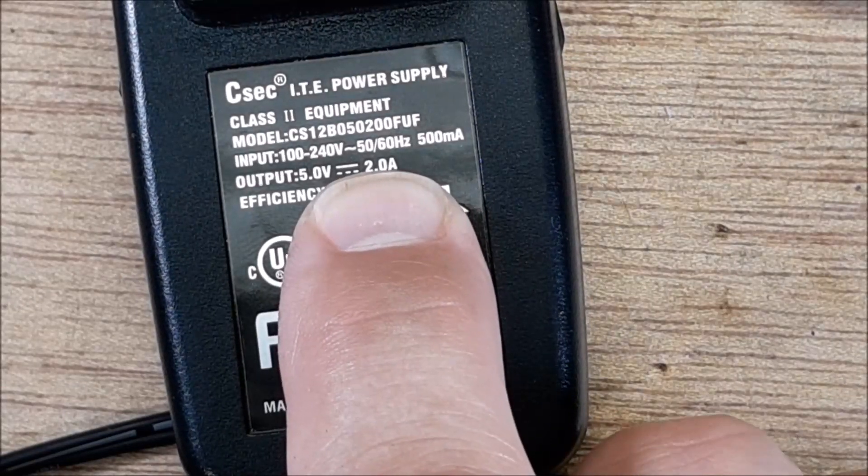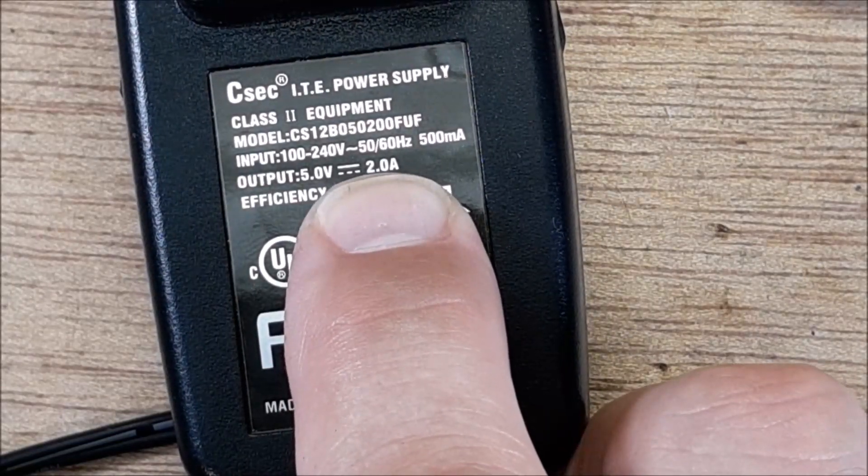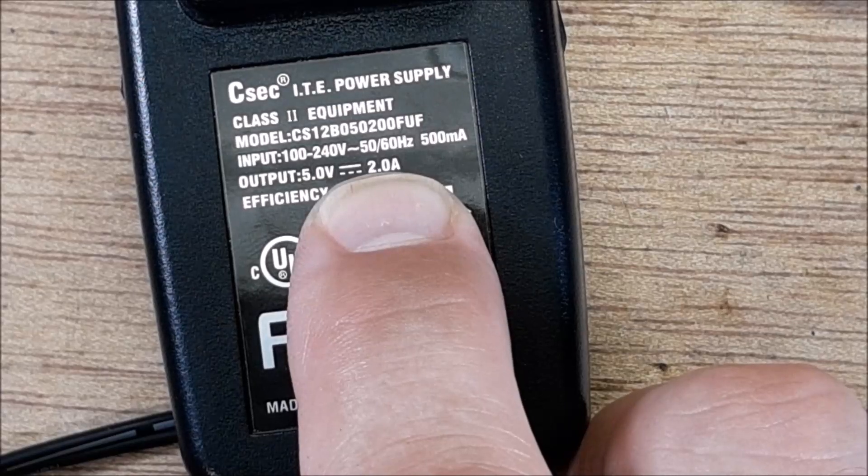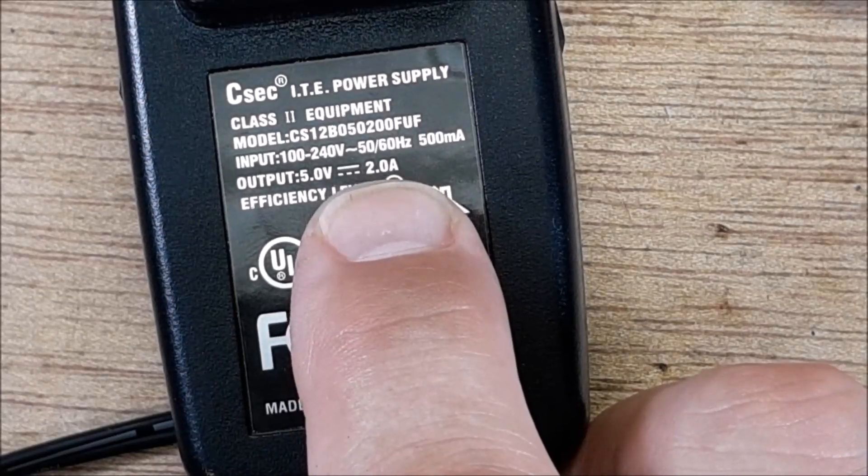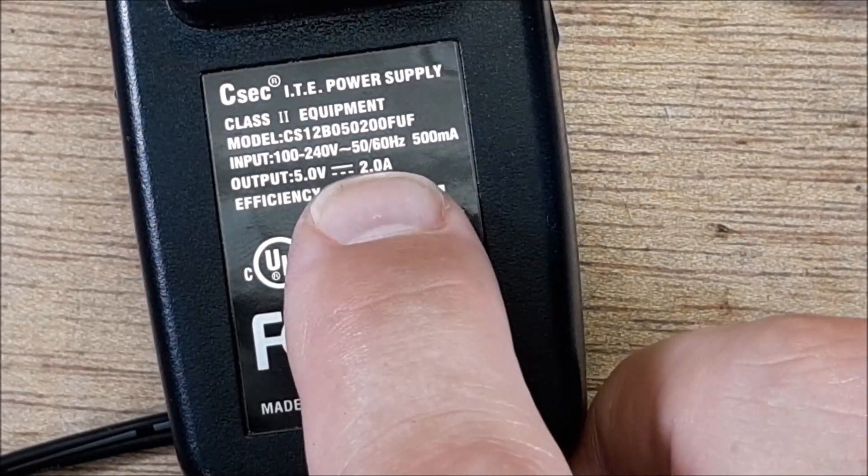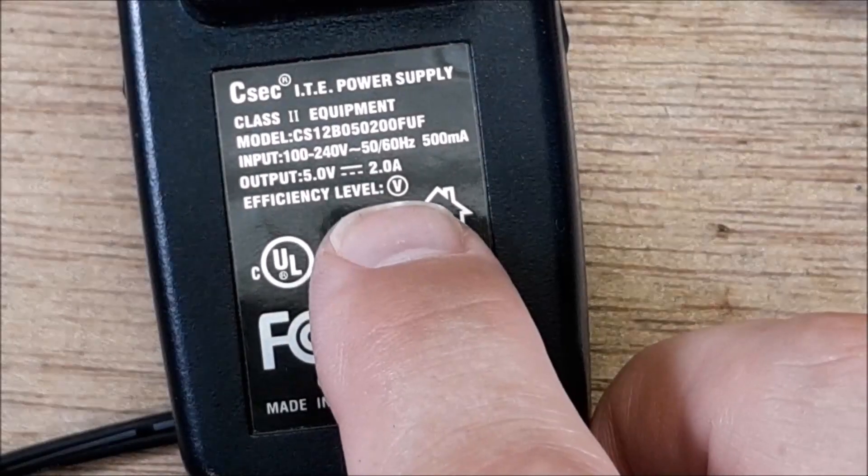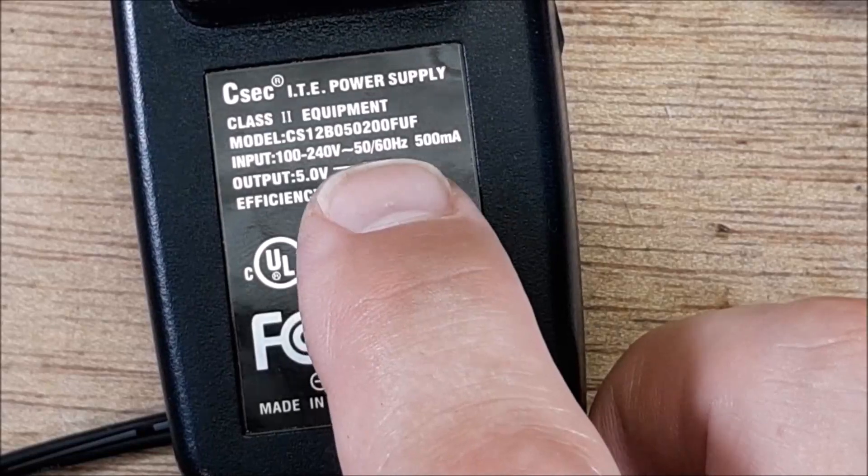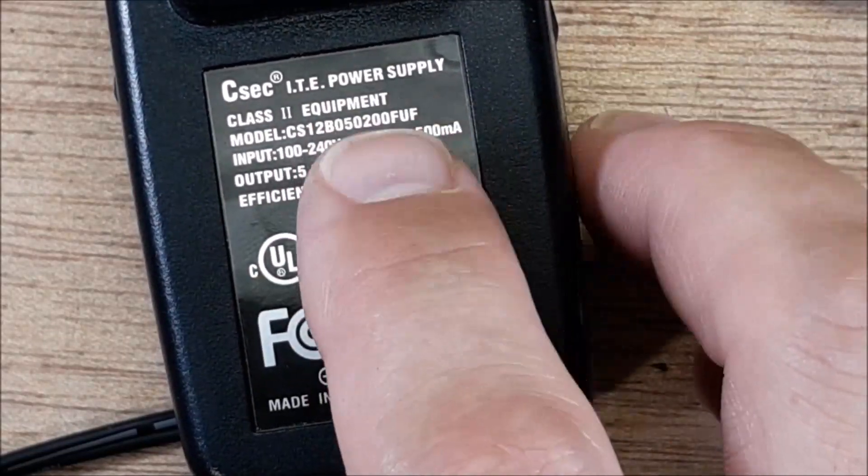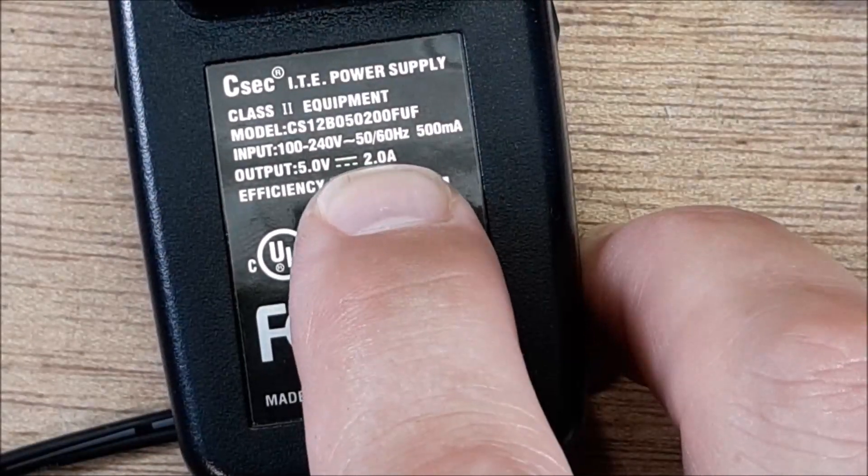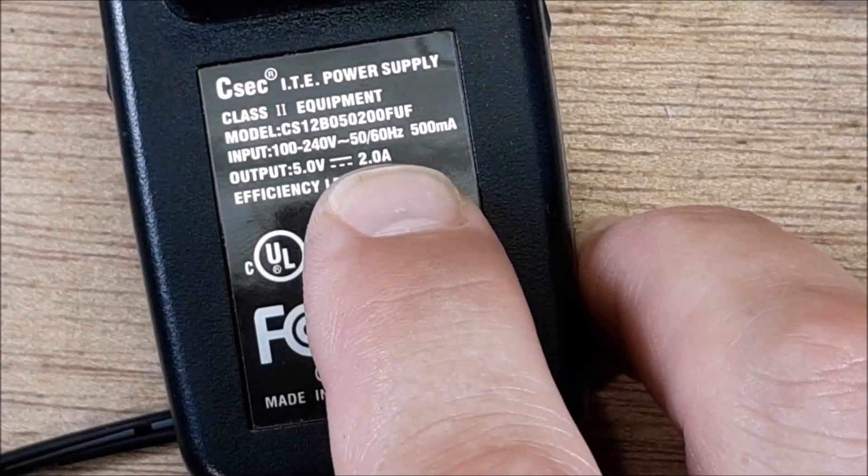You want it to say output 5 volts DC, and this one's 2 amps. If you can find one that's 3 amps, that would be even better. You don't really want to go under 1.5 amps because there are components out there in the FPV land that consume more than that. You start connecting VTXs and cameras together, you could exceed 1.5 and make this thing really hot. But 2.0 amps is perfect, just fine.